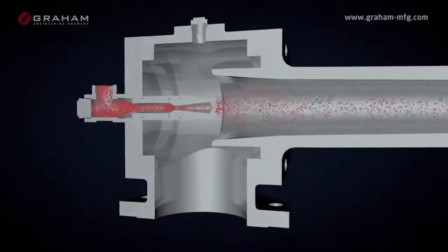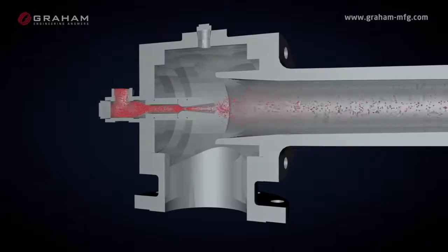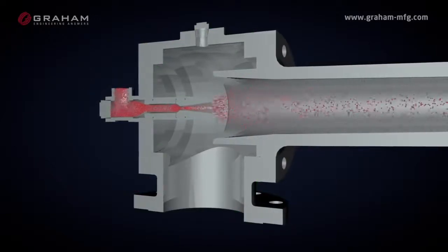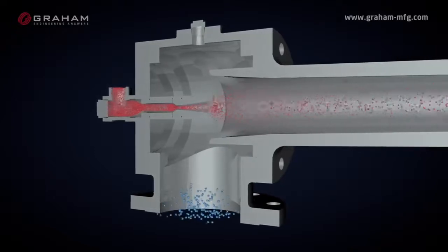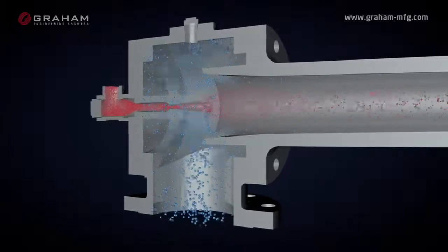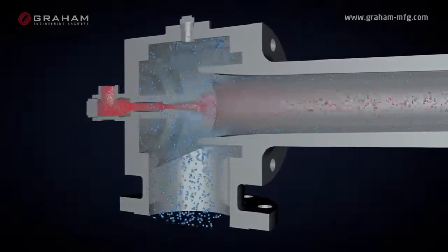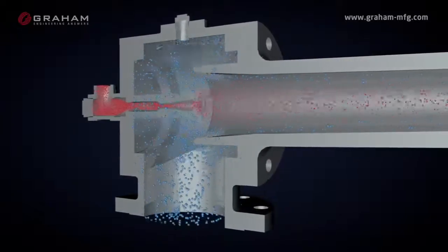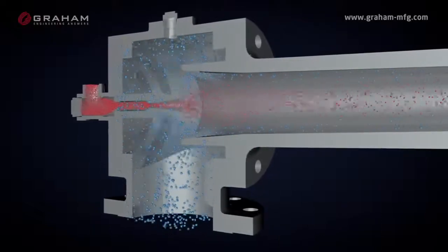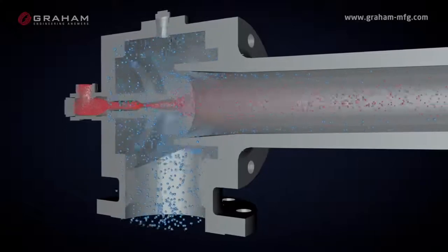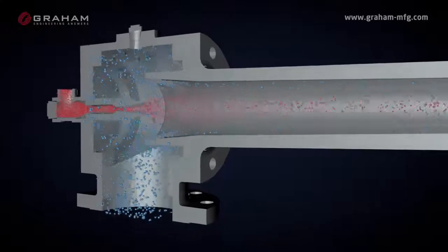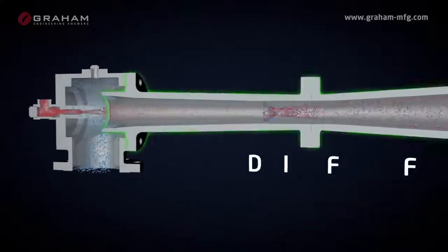Housing the motive nozzle is the third component: the suction chamber. This is the mechanical connection between the nozzle and the rest of the ejector. The high velocity motive stream mixes and entrains the processed gases in the suction chamber. Momentum is transferred from the high velocity motive stream to the suction load gases, accelerating the suction load gases and, consequently, decelerating the motive gas to a new mixture velocity.